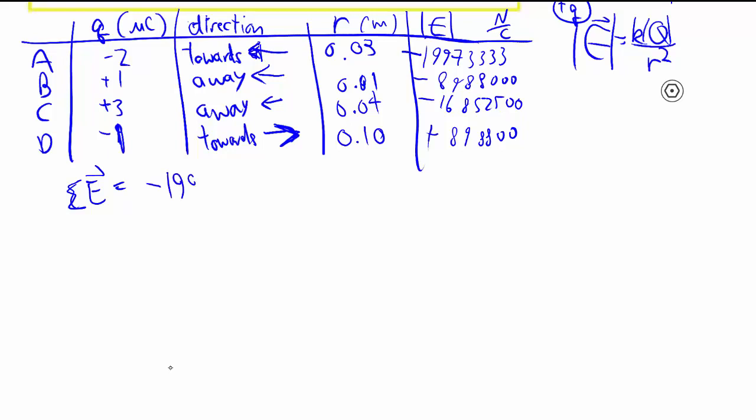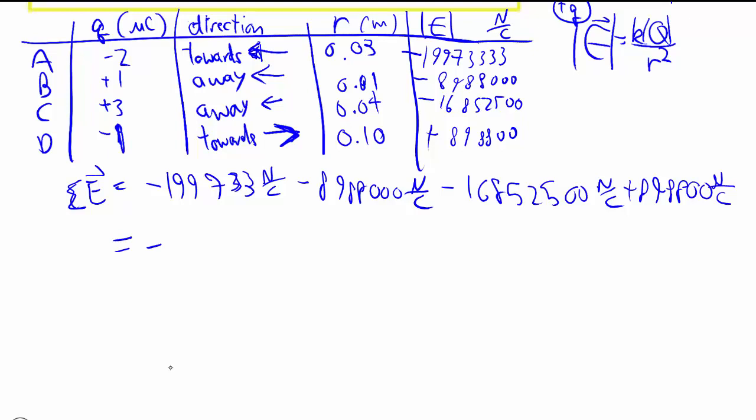So we add them up with the signs, newtons per coulomb minus 8, 9, 8, 8 newtons per coulomb. And finally, we have a plus, because that goes towards the right. Some big number of newtons per coulomb, because a coulomb is a huge charge, so it should have a huge force. And negative means it's technically to the left, but we'll keep the sign for now.